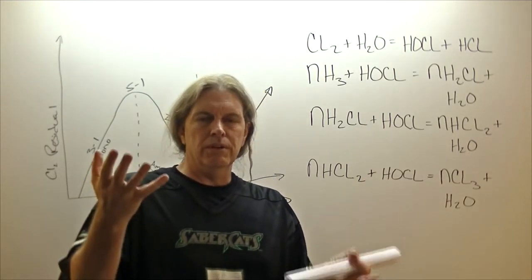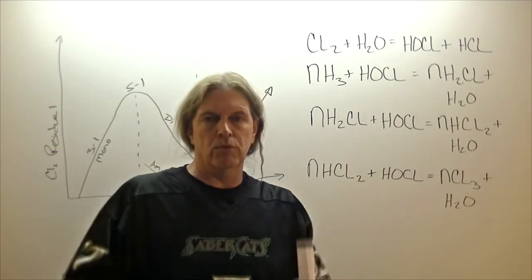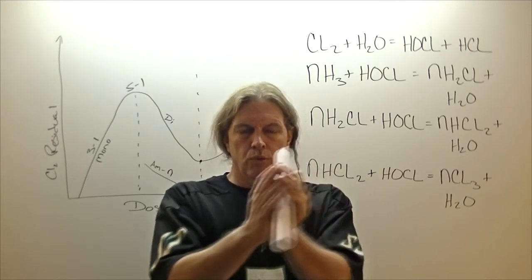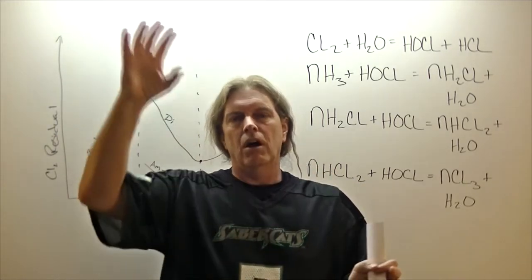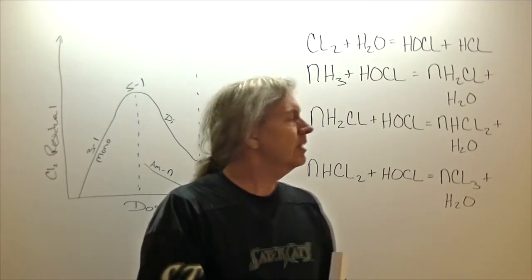Now when you're mixing these two, you want to make sure that your mixture stays between three to one to five to one, right in that range right there, basically three parts chlorine to one part ammonia, all the way up to five parts chlorine, to one part ammonia, and you don't want to go too much over that.